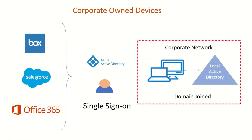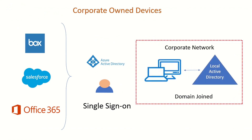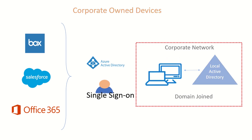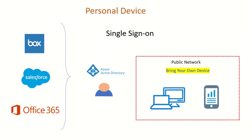All this is happening because you have initially domain joined this machine, meaning there is a reference object for this particular machine that exists in your Active Directory. But if we compare this with a scenario wherein we are giving users the privilege to bring their own devices — if I can get that device registered in Azure Active Directory so that Azure AD has a reference for that particular object, I will be able to provide single sign-on on that particular device as well.